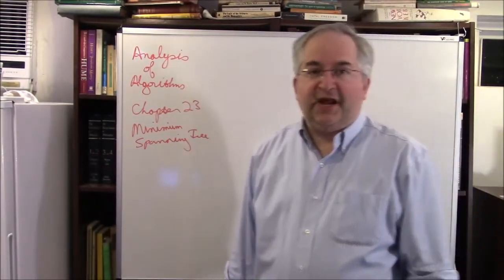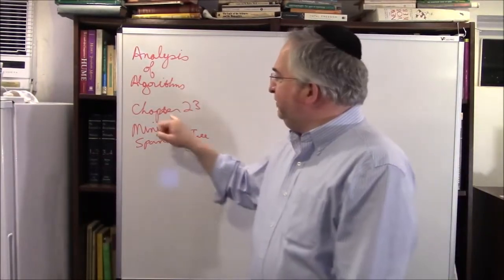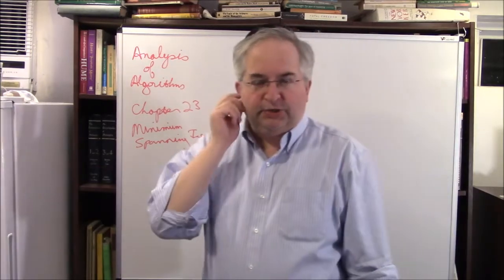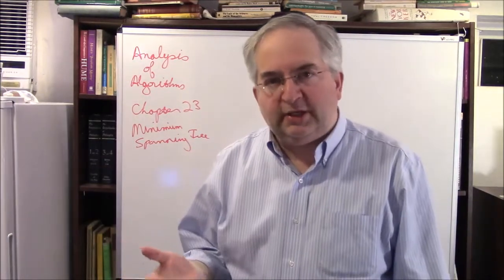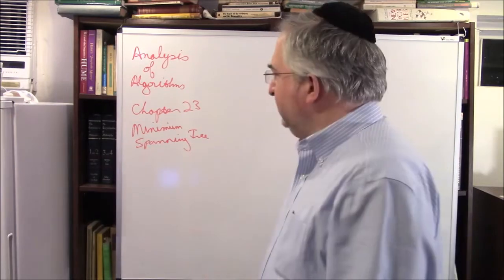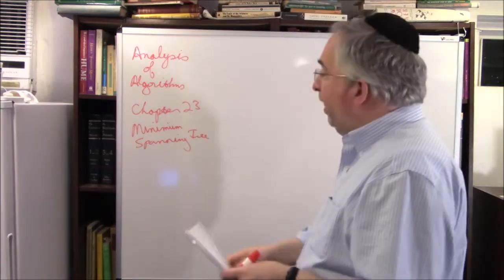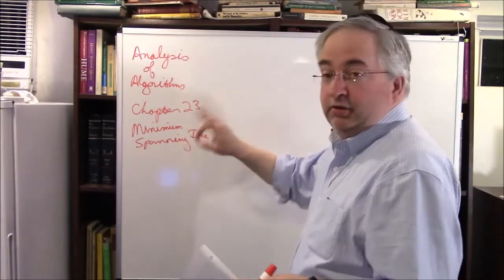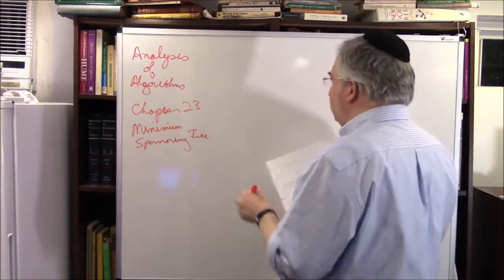The class is Analysis of Algorithms, Chapter 23: Minimum Spanning Tree. Chapter 22 covered elementary graph algorithms; now we go on with more graph algorithms. I'm going to motivate the minimum spanning tree when we get to the definition. So let's start off: what is a minimum spanning tree? Three words.